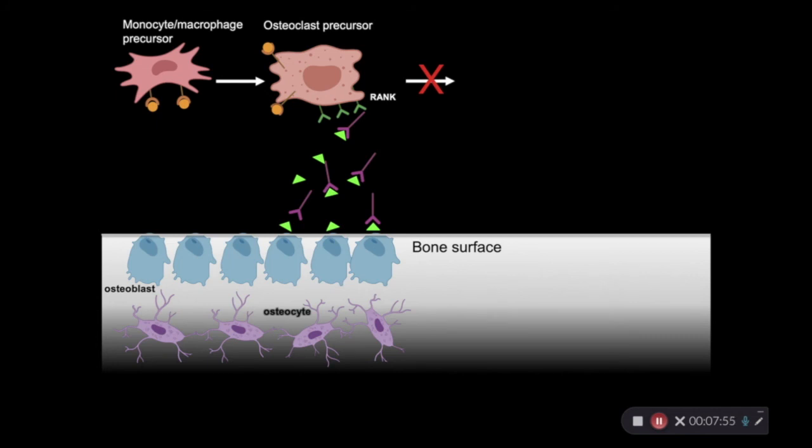So in effect, with more OPG, fewer osteoclasts are able to differentiate, and fewer are functional. And so that's going to tip that balance away from bone resorption. So again, these three components together, the RANK ligand, the RANK receptor, and osteoprotegerin, form the key regulatory system, which decides whether osteoclast differentiation occurs.